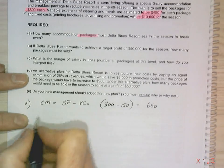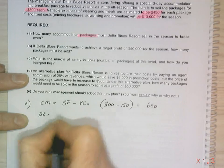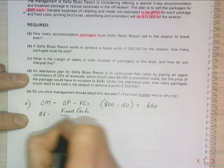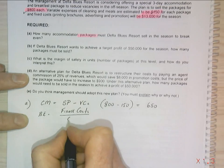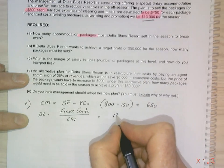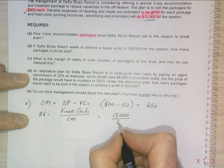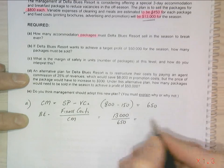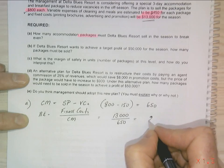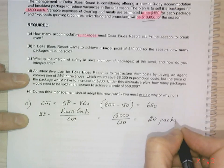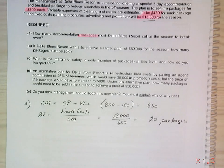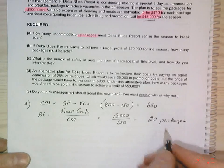Now I can work out from there - my break even equals my fixed cost divided by my contribution margin. So this equals $13,000 divided by $650, which equals 20 packages. So I've got 20 packages. That's my break even. So that's question A done.